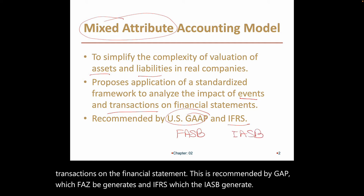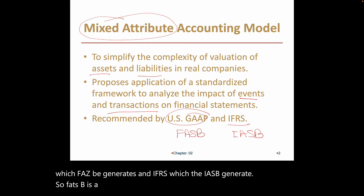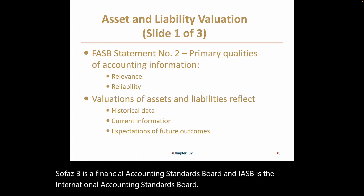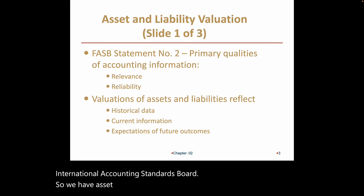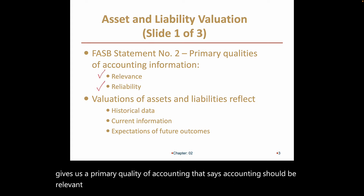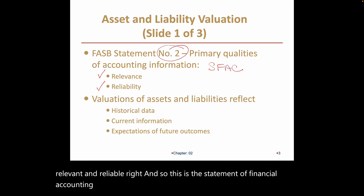FASB is the Financial Accounting Standards Board and IASB is the International Accounting Standards Board. For asset and liability valuation, FASB Statement Number Two — the Statement of Financial Accounting Concepts Number Two — gives us the primary quality of accounting, stating that accounting should be relevant and reliable.